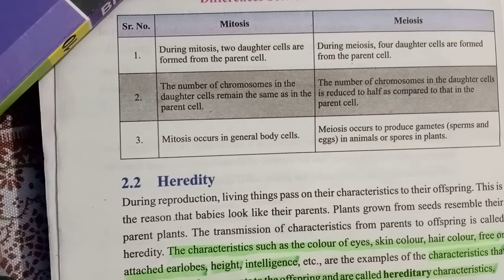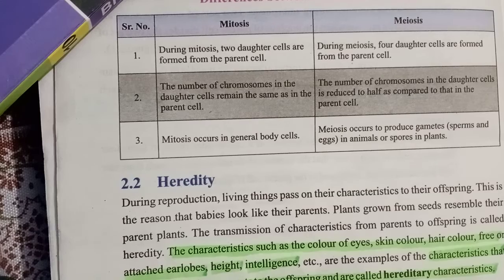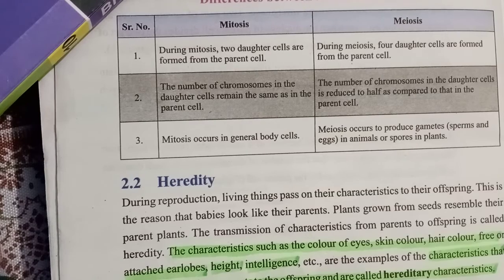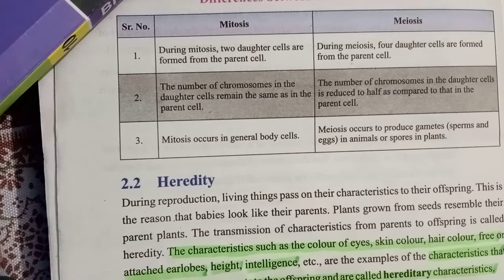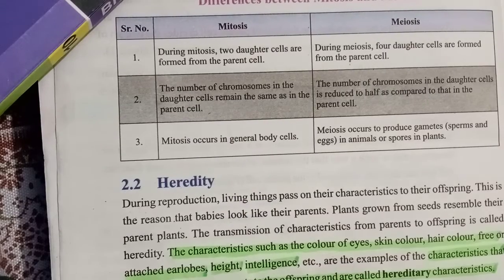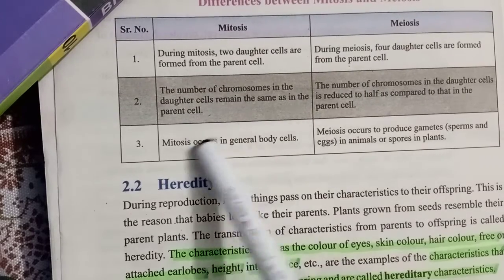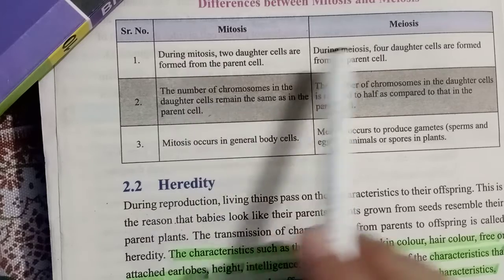Mitosis takes place in all our body's somatic cells, while meiosis takes place in the germline cells called gametes — male and female gametes. We also covered the differences between mitosis and meiosis. As you can see here, these are the differences. You can learn this table — you must remember it. Remember that one is a major difference.